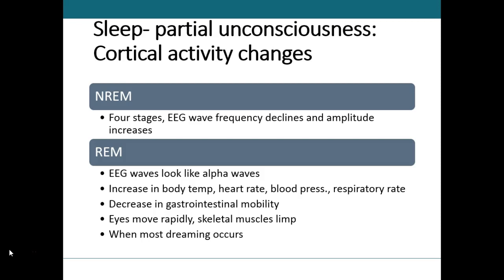Physiologically during REM sleep, heart and respiration rates increase, blood pressure increases, there is a significant decrease in muscle tone, and sometimes even sleep paralysis occurs. This is the period where most dreaming occurs. Brain imaging studies show increased activity in the visual association area and the limbic system — our seat of emotion — and decreased activity in the prefrontal cortex, which is where we reason. This may explain why dreams are often bizarre and illogical.